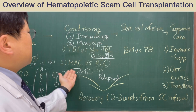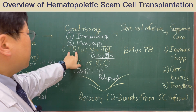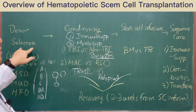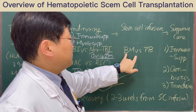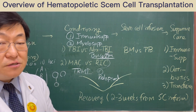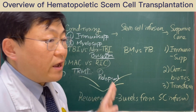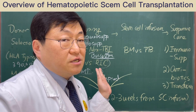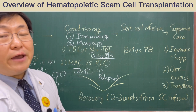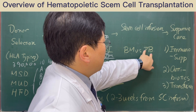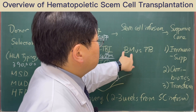After receiving the full conditioning — which consists of total body radiation or non-TBI-containing chemotherapy — the donor donates their stem cell. Previously, bone marrow stem cell was used, requiring anesthesia of the donor and puncturing the donor's iliac bone more than 100 times, which is a very time-consuming and painful process. But recently, we now use peripheral blood stem cells instead of bone marrow stem cells.